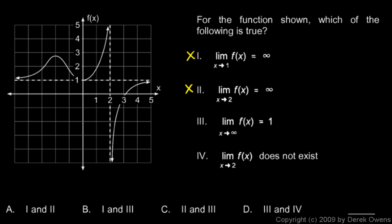Number 3 here, the limit as x approaches infinity equals 1. Yes, as x gets really huge, the function here is approaching this horizontal asymptote at 1. So that's correct.